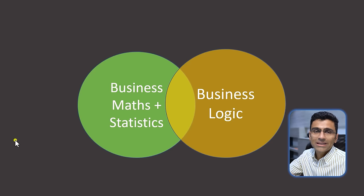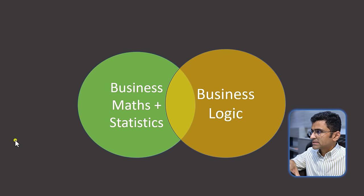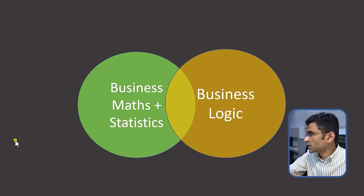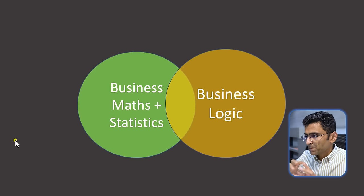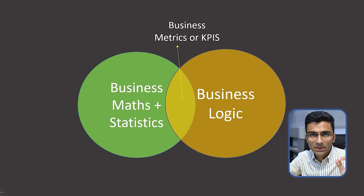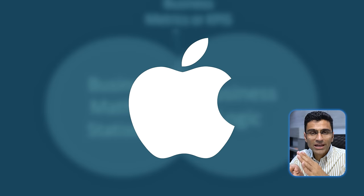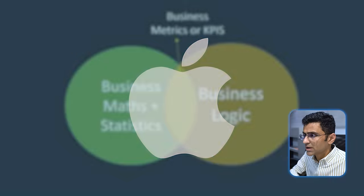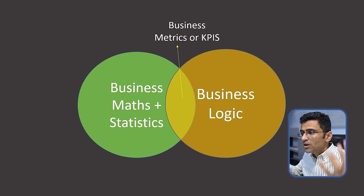Then come your math and statistics skills. You can learn basic math and statistics such as percentage, variance, standard deviation, correlation, mean, mode, and median — and these should be sufficient. These two will combine to form something called business metrics or KPIs — Key Performance Indicators. When looking at any business, KPIs are things like revenue, profit, how many iPhones Apple sold last year, what are my top five products, who are my top five customers. These are all KPIs or business metrics, and they are an intersection of business math, statistics, and business logic.